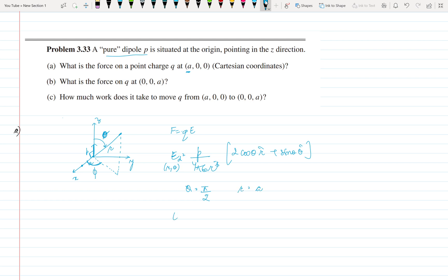And what is R here? R is a, it is given in the question. So we get the electric field as P upon 4 pi epsilon naught a cube. Pi by 2 cos becomes 0, only sine left and it becomes 1.